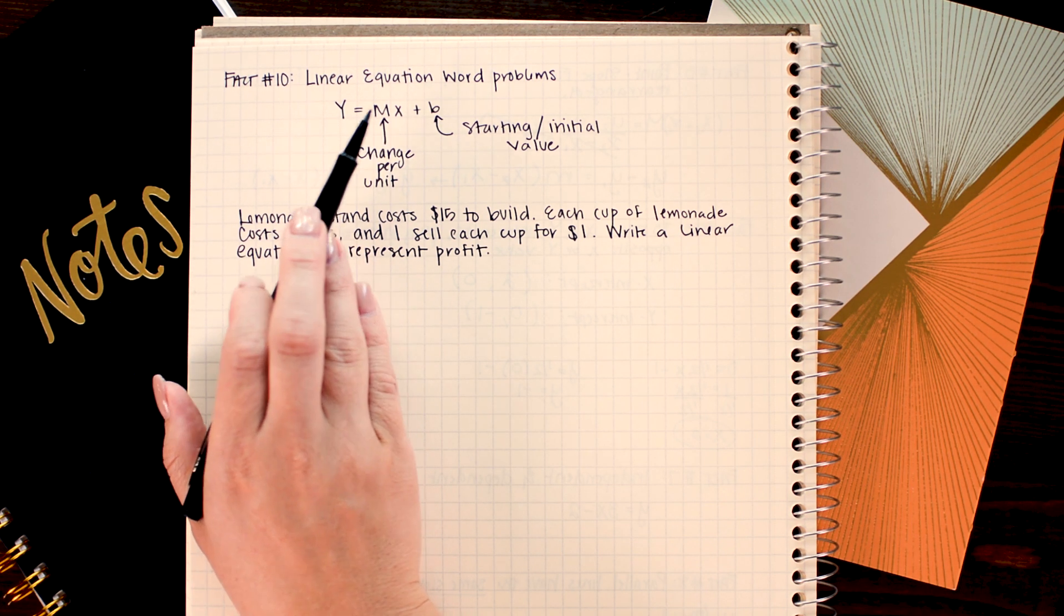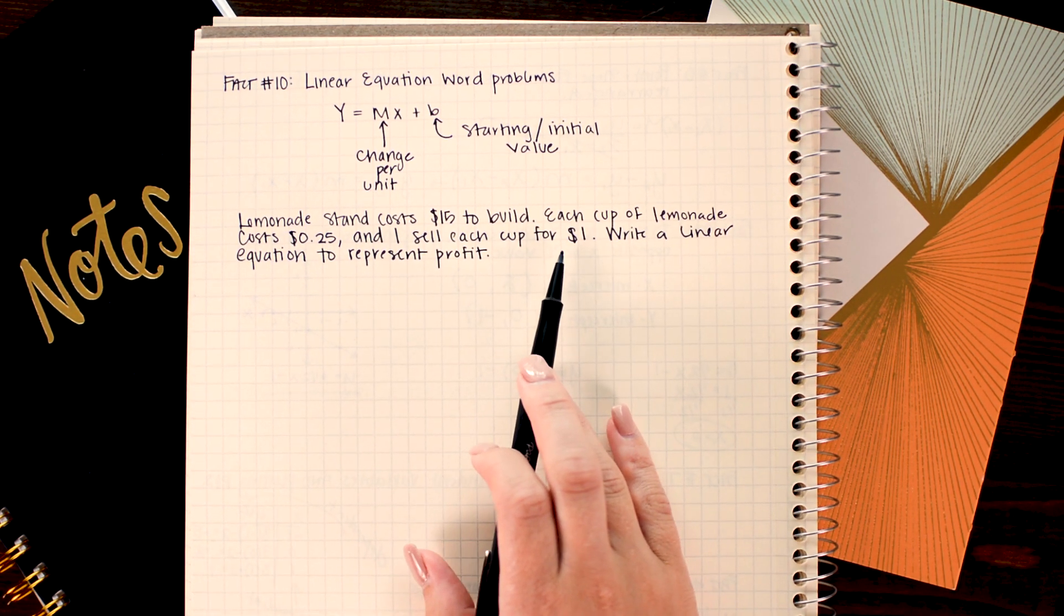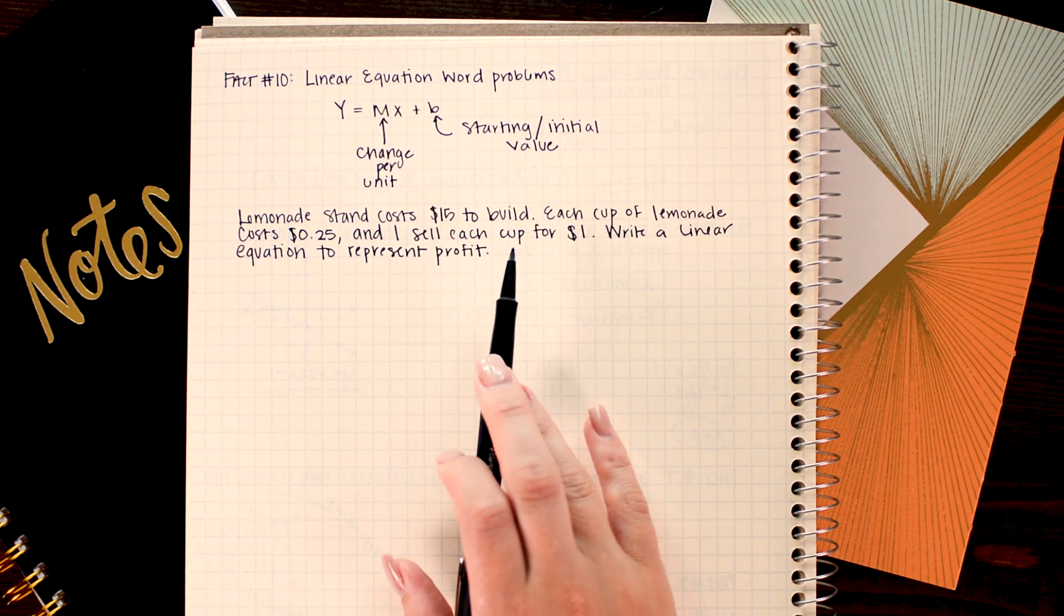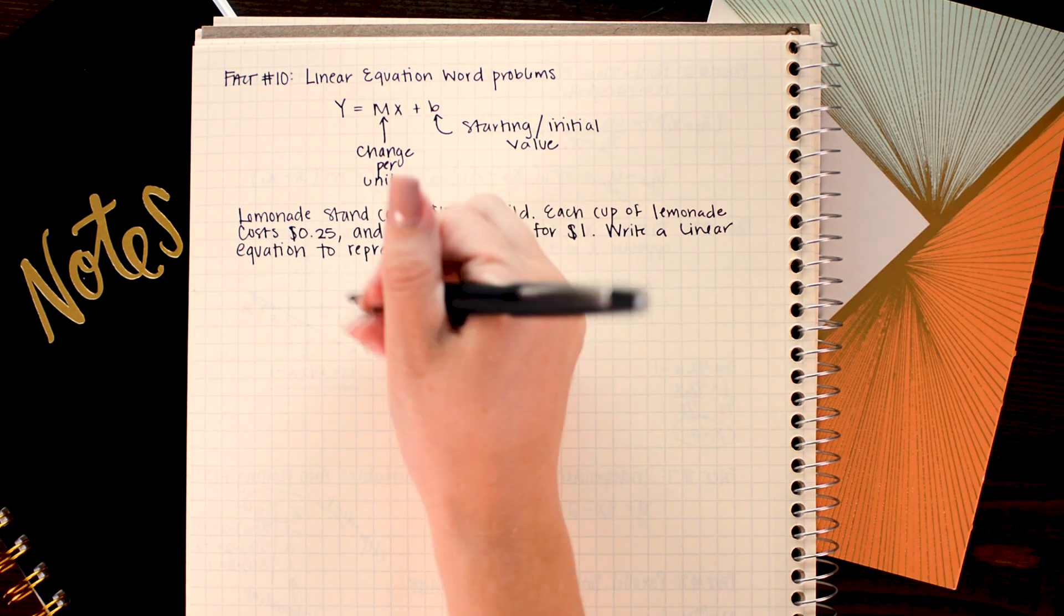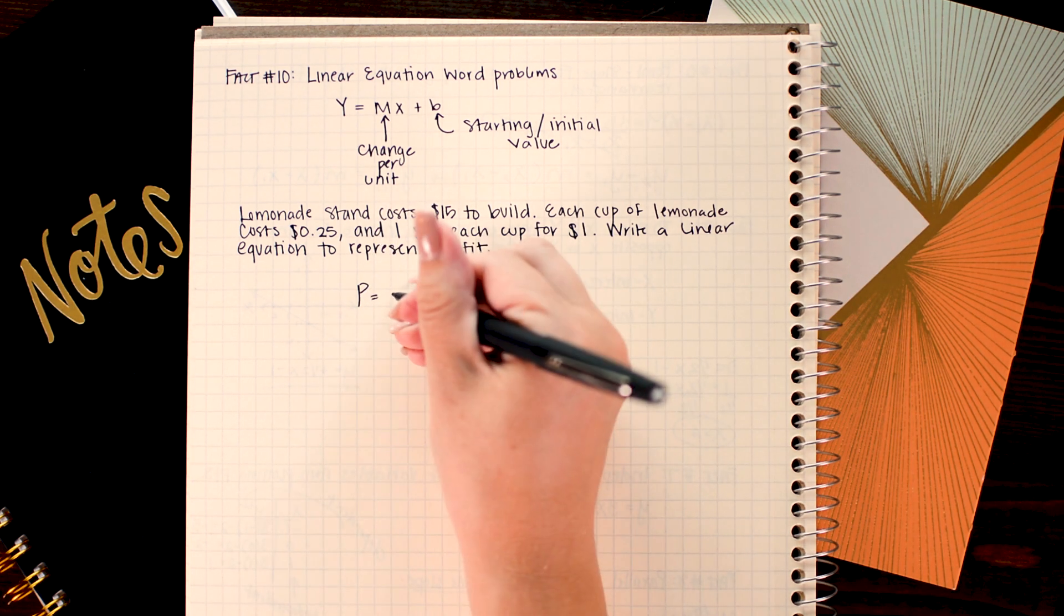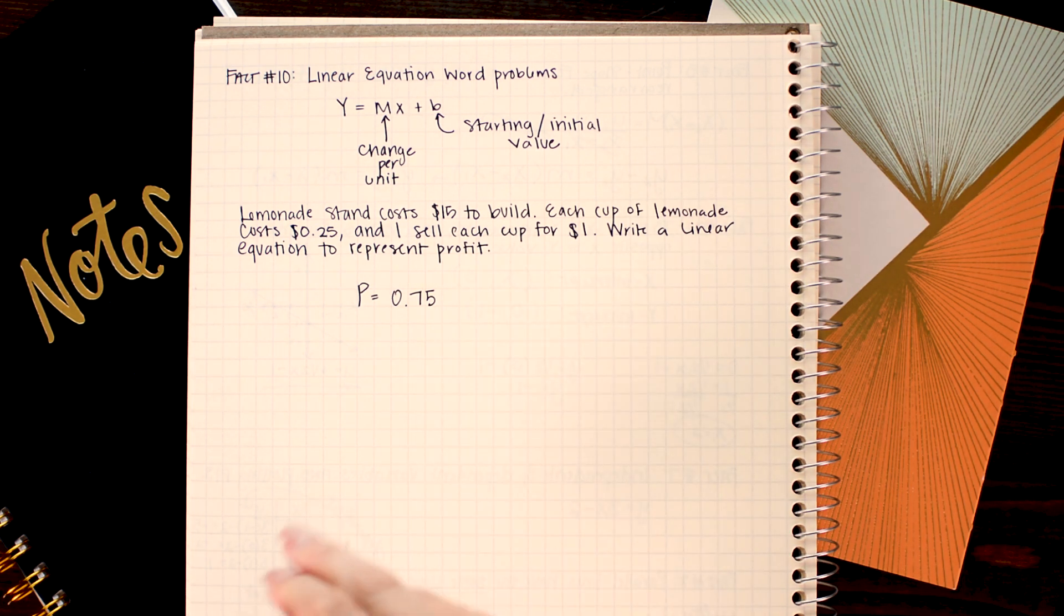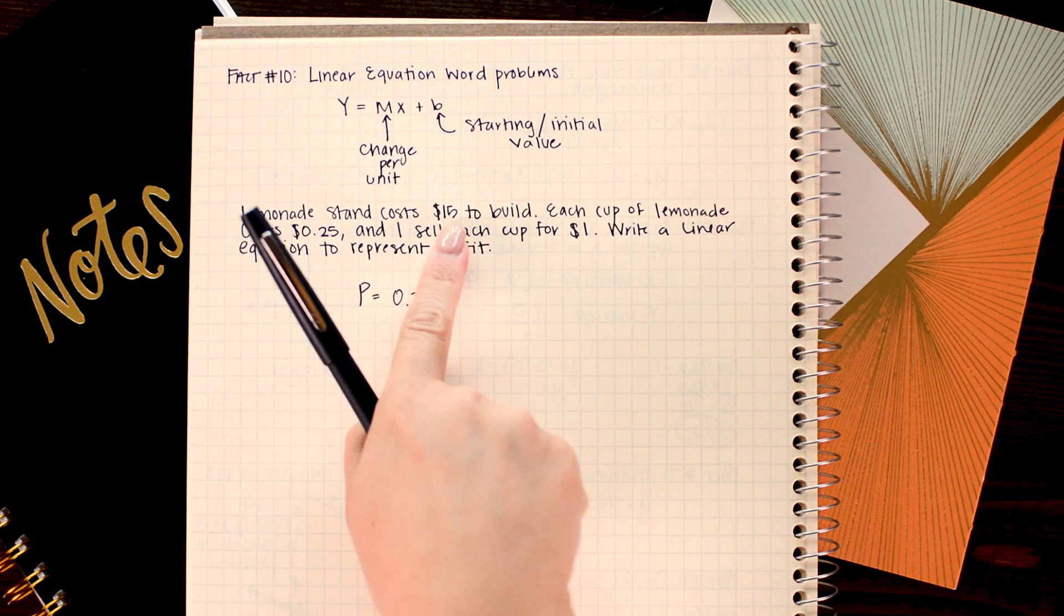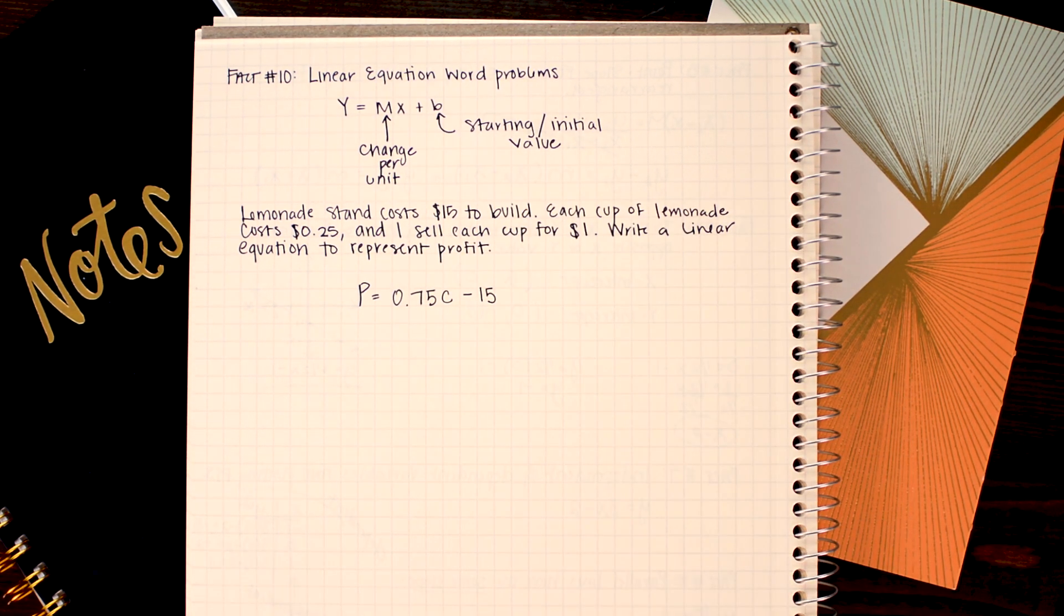So if I'm making a profit equation I want to know how much money I make per unit or per cup of lemonade. Here it costs me twenty five cents to make the lemonade and I sell each cup for a dollar. So my profit or my change per unit is seventy five cents in the positive. So a linear equation to model profit I might want to use p for profit instead of y and my change is 75 cents, a positive 75 cents per cup of lemonade. Now I can choose to keep x or use a different variable. I'm going to use c for cups and it cost me fifteen dollars to build so I start out at negative fifteen dollars profit. So I'm going to do minus fifteen there.